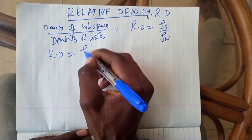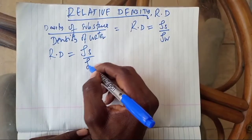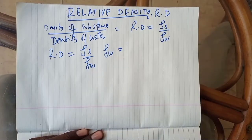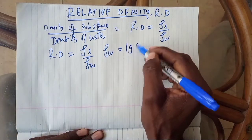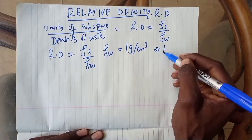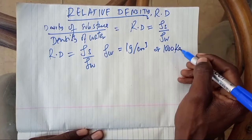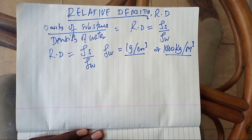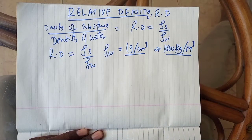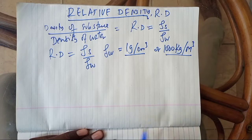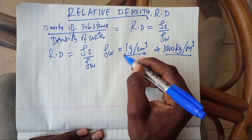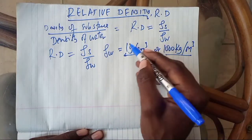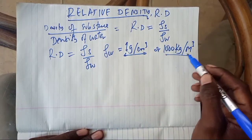Relative density will be determined by taking the density of the substance divided by the density of water. Remember, the density of water is definitely constant — that is 1 gram per centimeter cubic, or 1,000 kilogram per meter cubic. So when calculating relative density, in gram per centimeter cubic it is 1, and in kilogram per meter cubic it is 1,000.